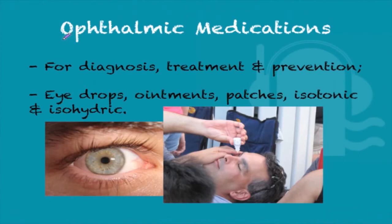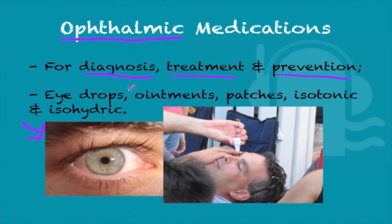The next type is ophthalmic medications, which are obviously related to the eye. Most of these are used to help diagnose a patient, treat them, or in preventative cases. The most frequent types are eye drops, ointments, patches, isotonic solutions, and isohydric solutions. The eye is a very sensitive organ, so we want the pH and the consistency of solutions given to be very similar to natural conditions, so as not to cause irritation and redness in the white of the eye.